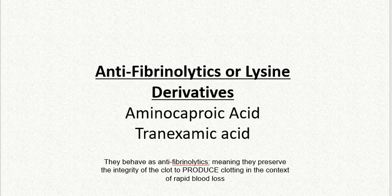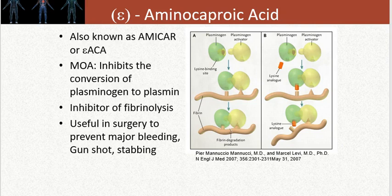There are two drugs in this class: aminocaproic acid and tranexamic acid. These drugs basically preserve clots, which is really useful in the context of rapid or dramatic blood loss. Aminocaproic acid, also known as Amicar, inhibits the conversion of plasminogen to plasmin. It's useful in surgery instances involving dramatic blood loss or major bleeding emergencies such as gunshot or stab wounds.